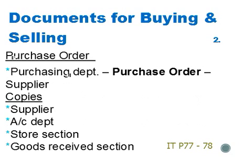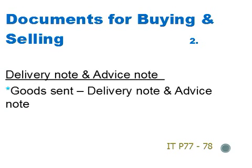Once the quote or estimate has been received, the purchasing department will send a purchase order to the supplier requesting the goods. Copies of the purchase order are also sent to the accounts department so they can check against the invoice when it comes, to the store section so they can update the inventory records, and to the goods received section so they know the goods are coming. When the goods are sent, they will be accompanied with a delivery note, which is signed and taken back to the supplier, and an advice note, which the customer keeps.